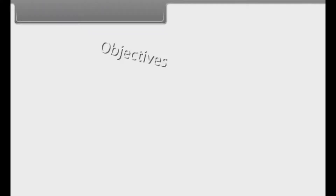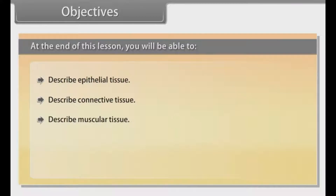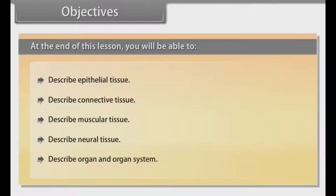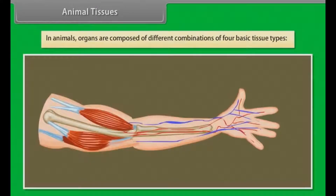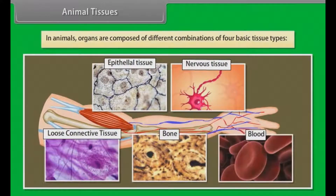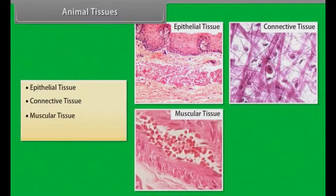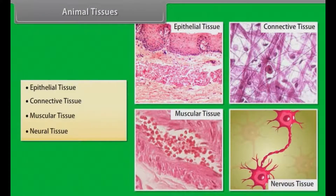Objectives. At the end of this lesson, you will be able to: describe epithelial tissue, describe connective tissue, describe muscular tissue, describe neural tissue, and describe organ and organ system. In animals, organs are composed of different combinations of four basic tissue types. They are: epithelial tissue, connective tissue, muscular tissue, and neural tissue. Let's know about them in detail.